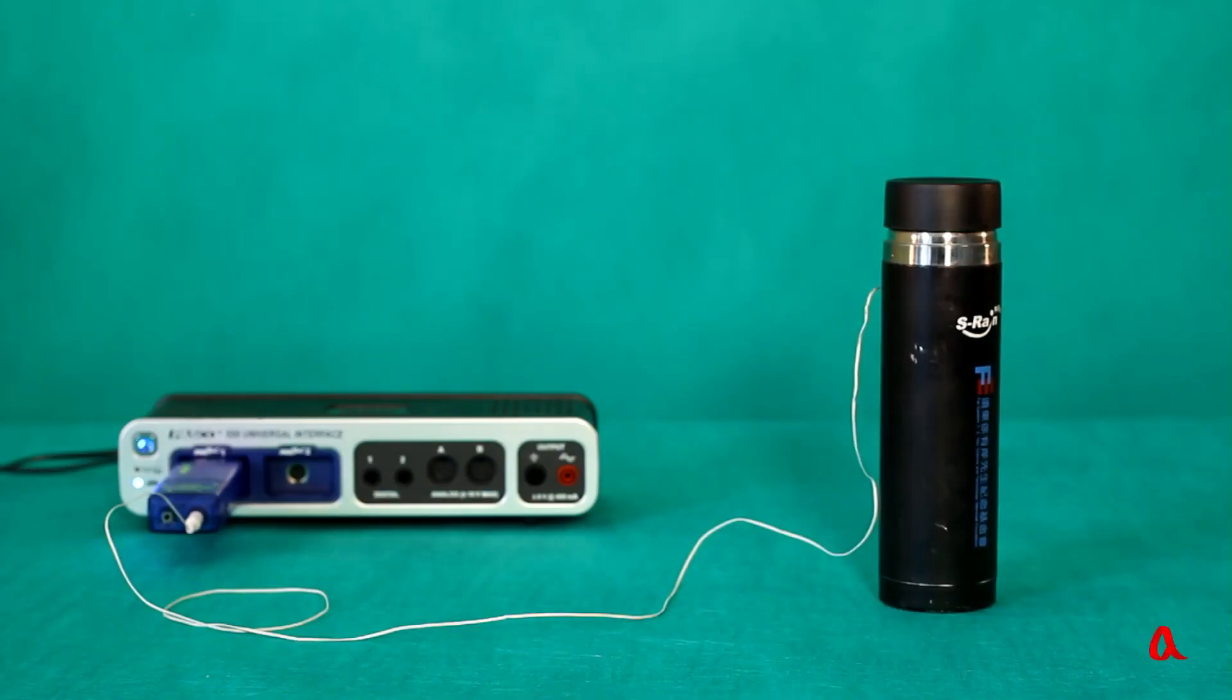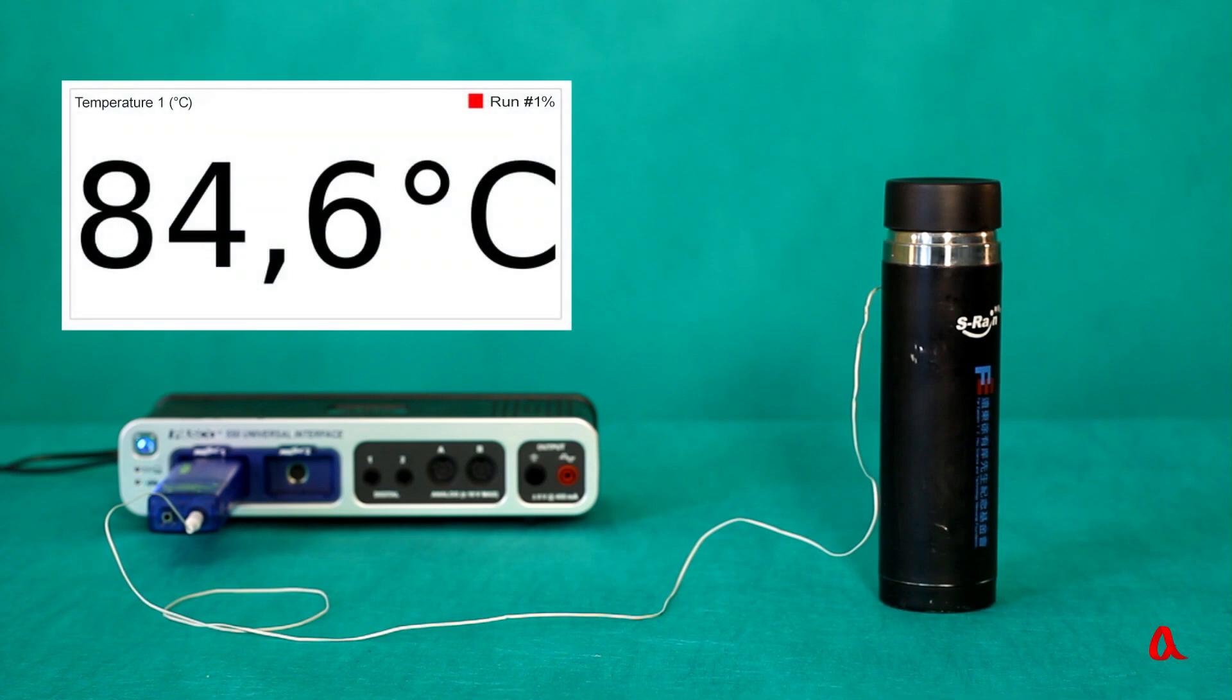We pour some boiling water into a vacuum flask, put in a piece of Panoplex with a thermal sensor in it and allow that piece to heat up. Now its temperature is nearly 85 degrees.